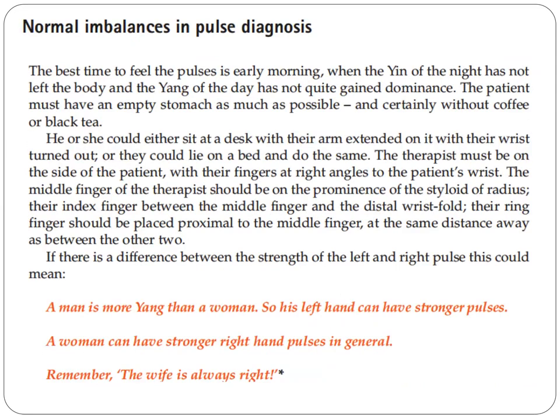Regarding normal imbalances in pulse diagnosis: the best time to feel the pulses is early morning, when the yin of the night has not left the body and the yang of the day has not quite gained dominance. The patient must have an empty stomach — certainly without coffee or black tea. They can sit at a desk with their arm extended and wrist turned out, or lie on a bed. The therapist must be on the side of the patient, with their fingers at right angles to the patient's wrist, and the middle finger on the prominence of the styloid process of the radius.